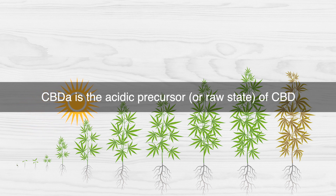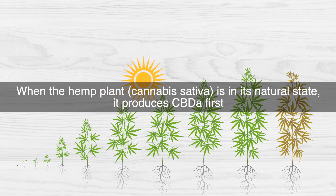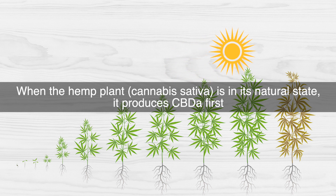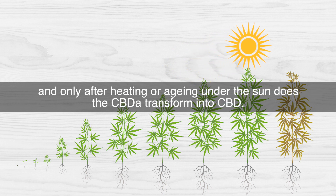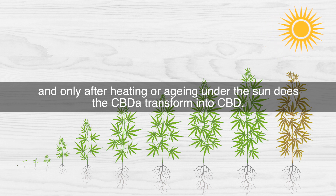CBDA is the acid precursor, or raw state, of CBD. When the hemp plant, cannabis sativa, is in its natural state, it produces CBDA first, and only after heating or aging under the sun does the CBDA transform into CBD.